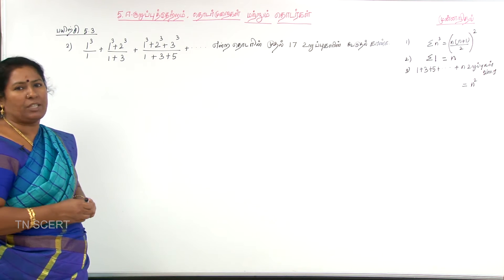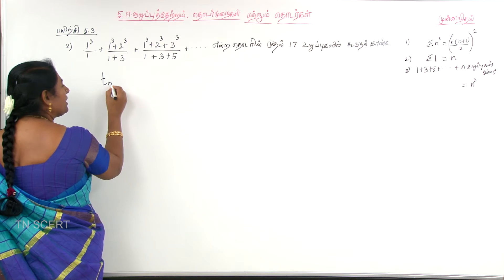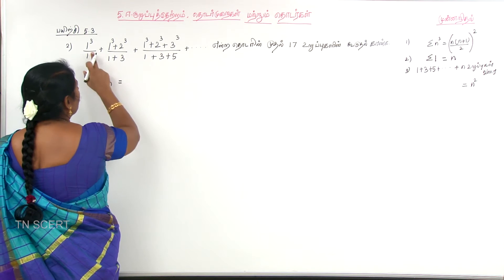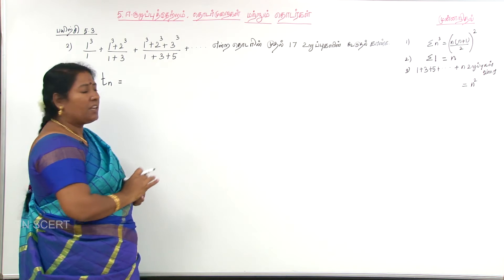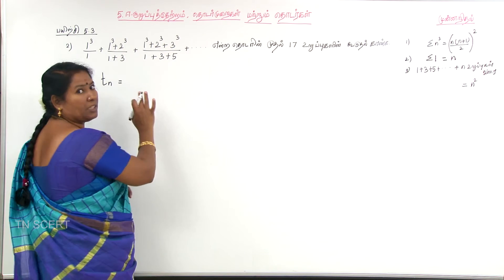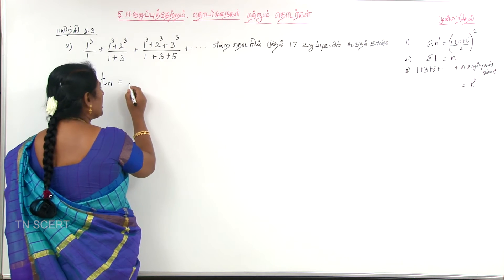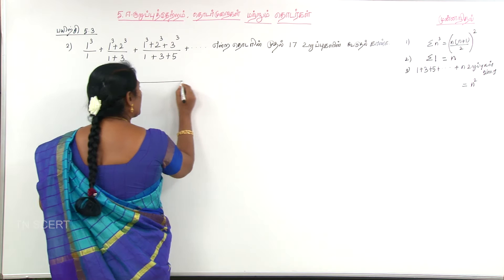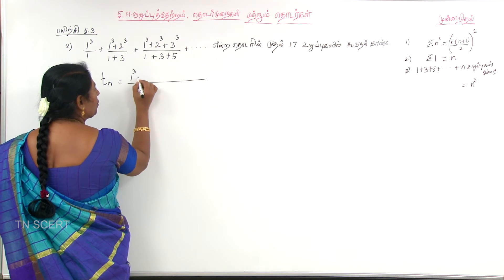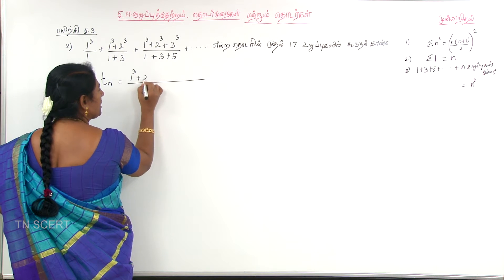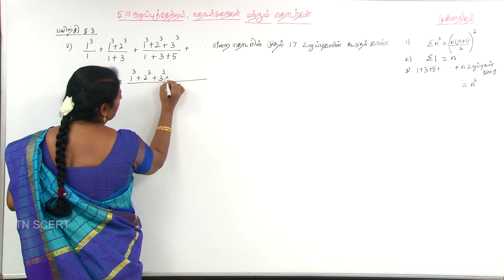What term is tn? What term is 1 cube? 2 cube. 3 cube. What term is tn? 1 cube plus 2 cube, 3 cube plus etc.